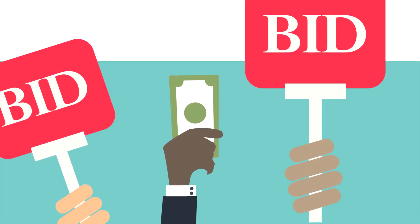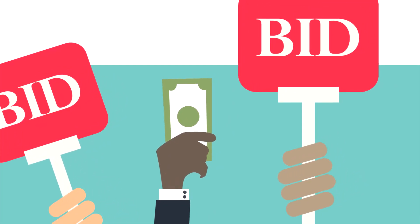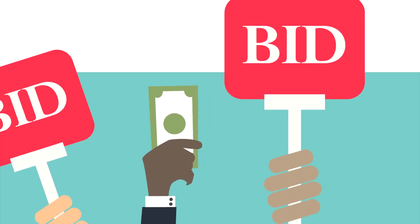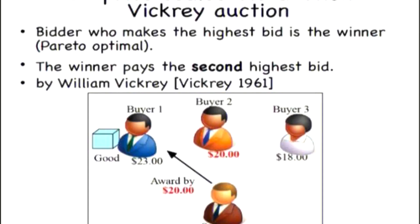Vickrey auction, also known as a sealed bid second price auction, is identical to the sealed first price auction except that the winning bidder pays the second highest bid rather than their own.